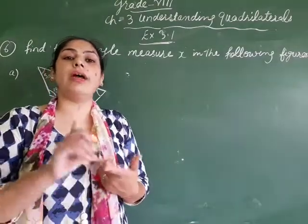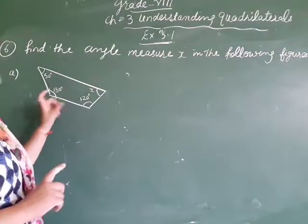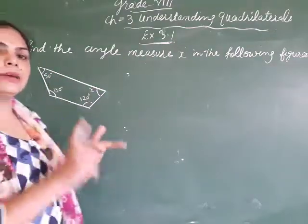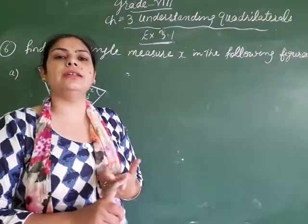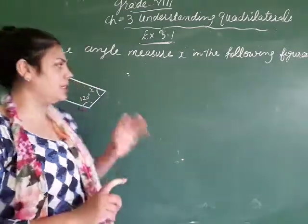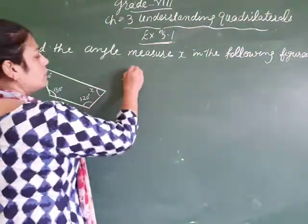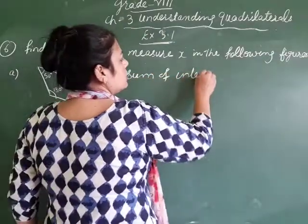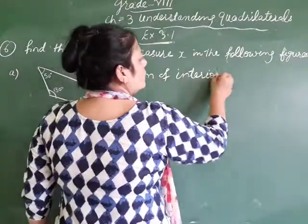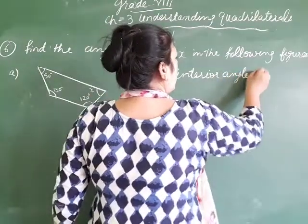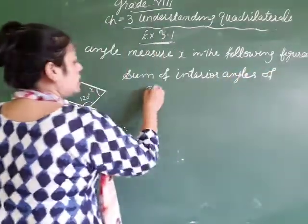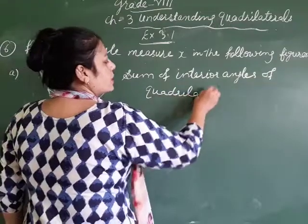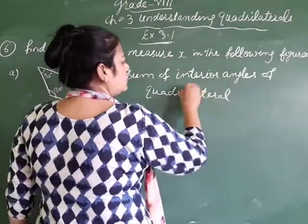So, what is the sum of angles of this quadrilateral? We know that sum of the interior angles of the quadrilateral is 360 degrees.